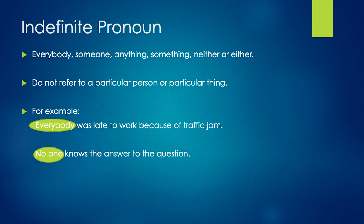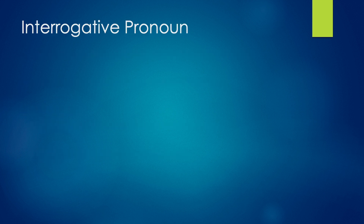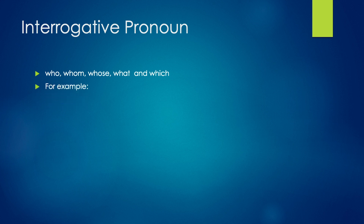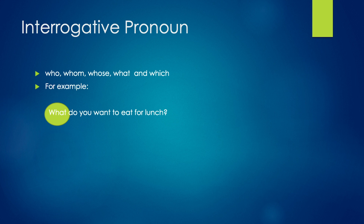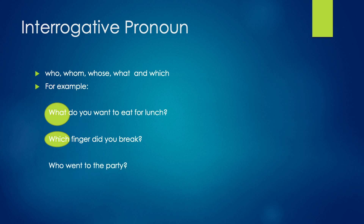Now let's talk about the final category of pronouns — interrogative pronouns. Interrogative pronouns are question words like who, whom, whose, what, and which. For example, 'What do you want to eat for lunch?' — here 'what' is the interrogative pronoun used when we have many options. Whereas if we have only a few options, we use 'which,' like 'Which finger did you break?' Another example: 'Who went to the party?' — here 'who' is asking a question, so it is an interrogative pronoun.